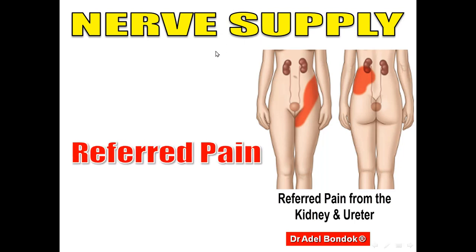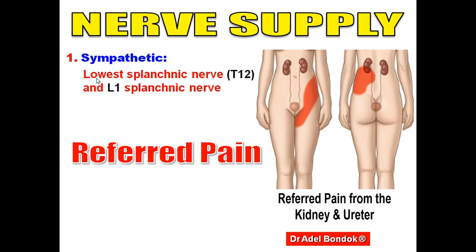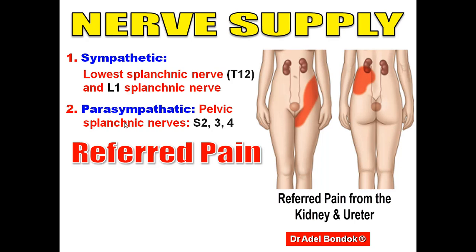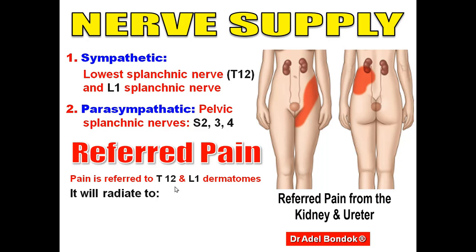Regarding the nerve supply of the ureter and referred pain: sympathetic supply comes from the lowest splanchnic nerve (T12) and the first lumbar splanchnic nerve. Parasympathetic supply comes from the pelvic splanchnic nerves S2, 3, and 4. Regarding referred pain from the kidney and ureter, pain is referred to the dermatomes T12 and L1, radiating to the lumbar region, anterior abdominal wall, and external genitalia.